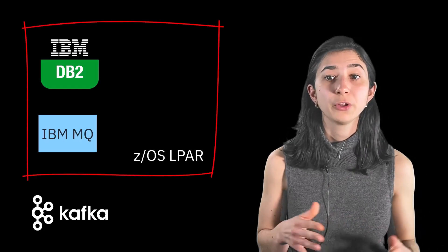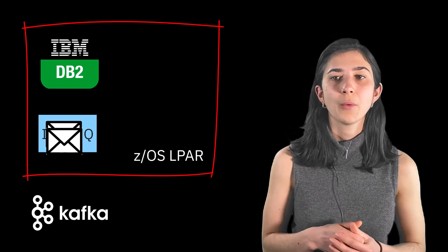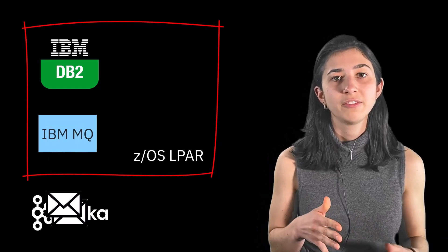As an example, you might want to use MQ with Kafka to stream inventory changes from your DB2 database running on z/OS out to Kafka via MQ messages.